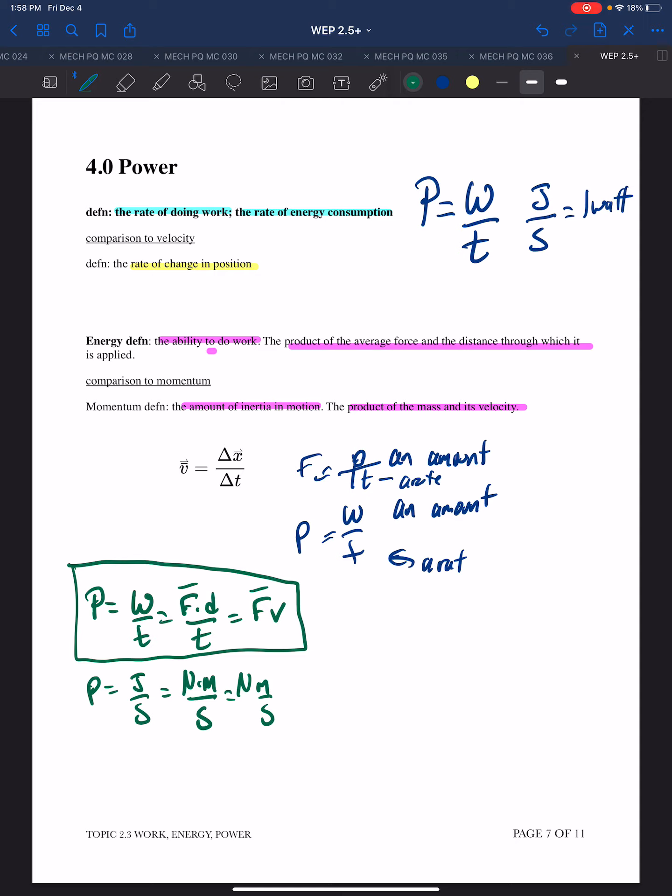We could take these units a little further. Newtons are, Newtons, F equals MA, so Newtons is a kilogram meter per second squared. So substituting in, we get kilogram meter per second squared times meters per second. And that then is units of kilogram meter squared per second cubed.